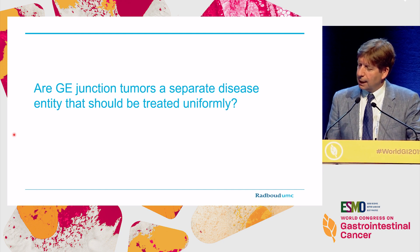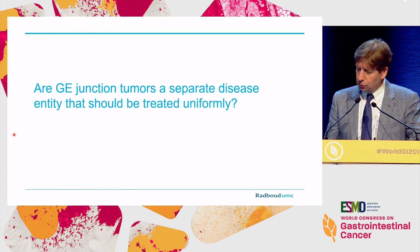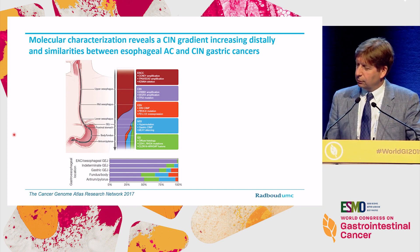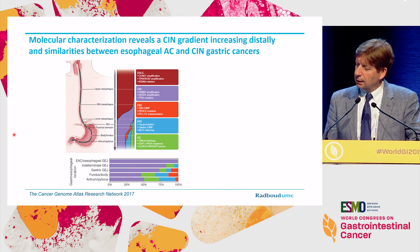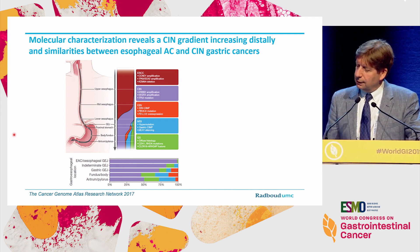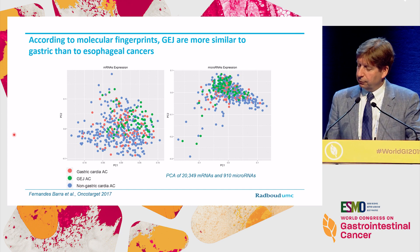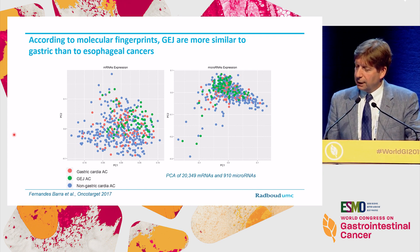I'd like to ask three different questions during this debate. The first one is: are GEJ junction tumors a separate disease entity that should be treated uniformly? We know from the molecular characterization by the TCGA network that if you move down the esophagus towards the GEJ junction, there is a clear enrichment of the chromosomal instable subtype. But if you move further towards the cardia and beyond, the tumors take a more gastric-like subtype.